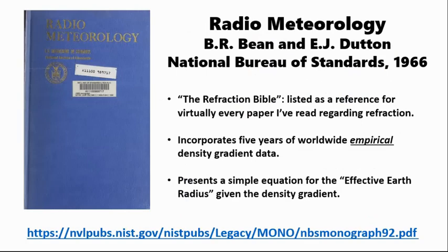What I'm going to be looking at is a book produced in 1966 by the National Bureau of Standards, which is now NIST, by Bean and Dutton. It appears in the references and citations for pretty much every paper that I've read regarding refraction. It incorporates five years of worldwide empirical density gradient data — ground stations and weather balloons — and gives a fairly simple derivation for an equation for the effective Earth radius, which is the radius multiplier of 7 over 6R or otherwise. Here's a link, which I'll also put in the description.